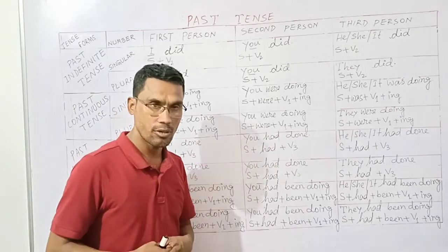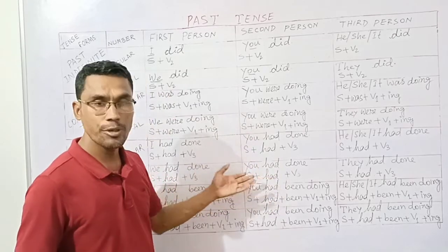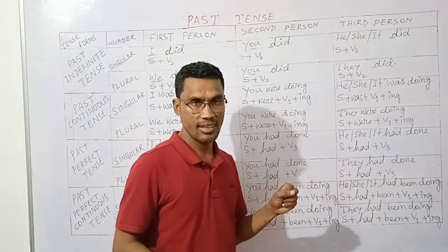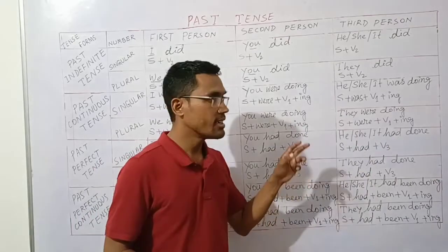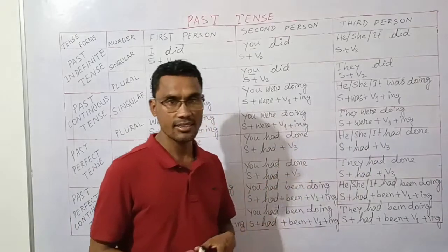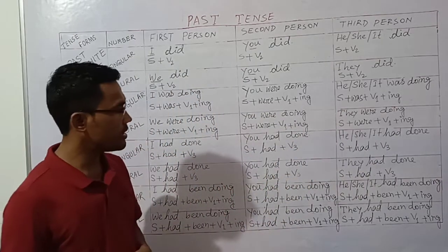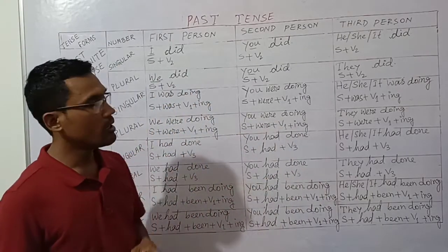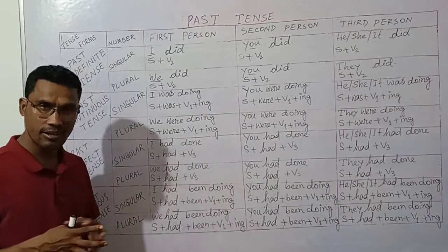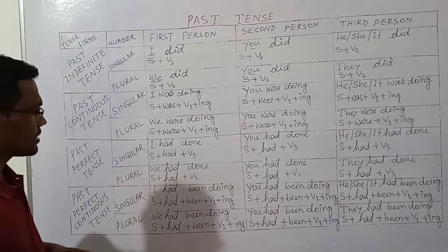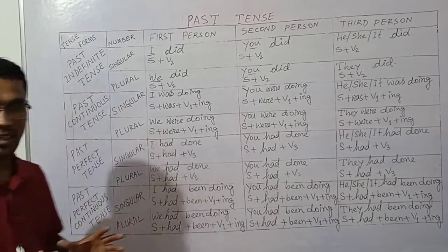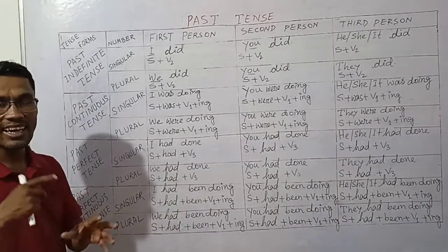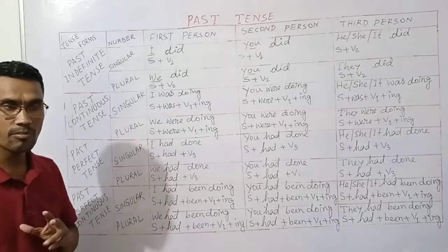Second person: 'You had done your homework.' Third person singular: 'He had done his homework,' 'She had done her homework.' Third person plural: 'They had done their homework.'